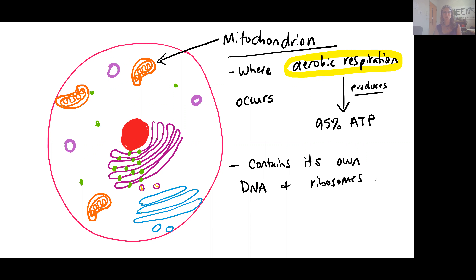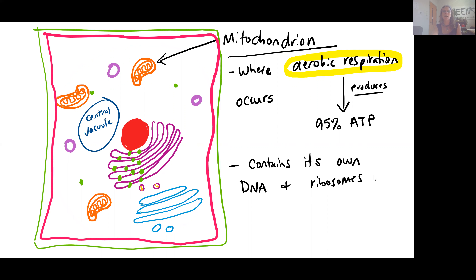We also see that the mitochondria have their own DNA molecule and their own ribosomes. This is interesting because it's starting to look like a prokaryotic cell inside of a eukaryotic cell. Mitochondria are found in both animal and plant cells — in all of our eukaryotic cells. Our focus this semester is on plant and animal cells, and we will see mitochondria in both.